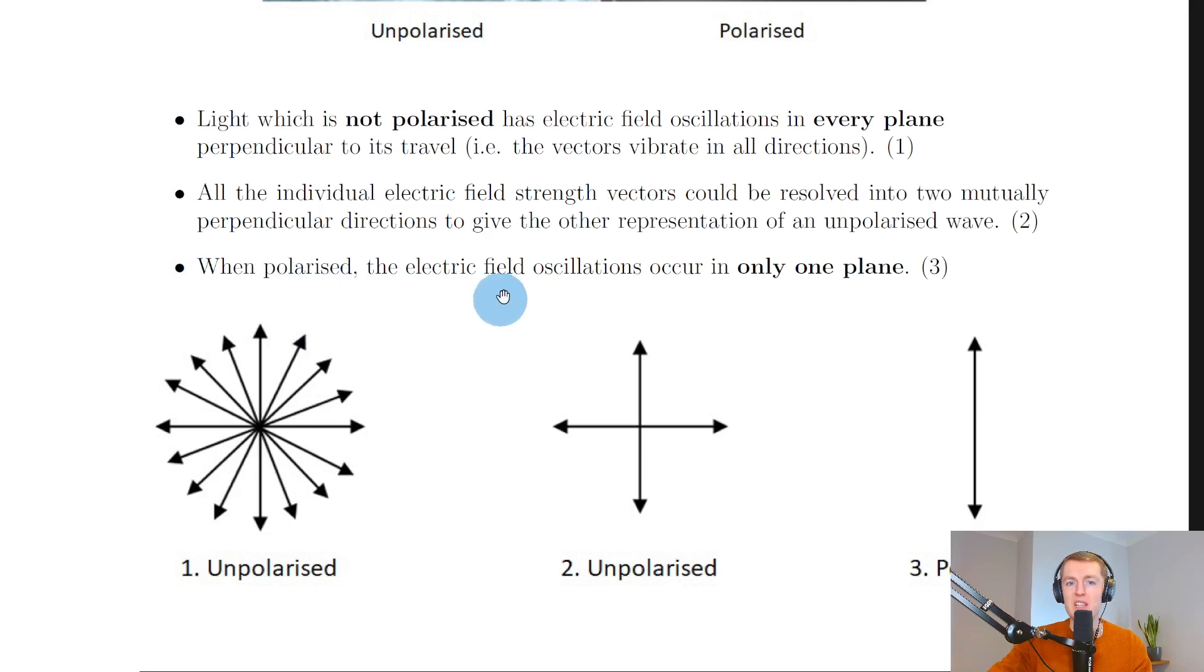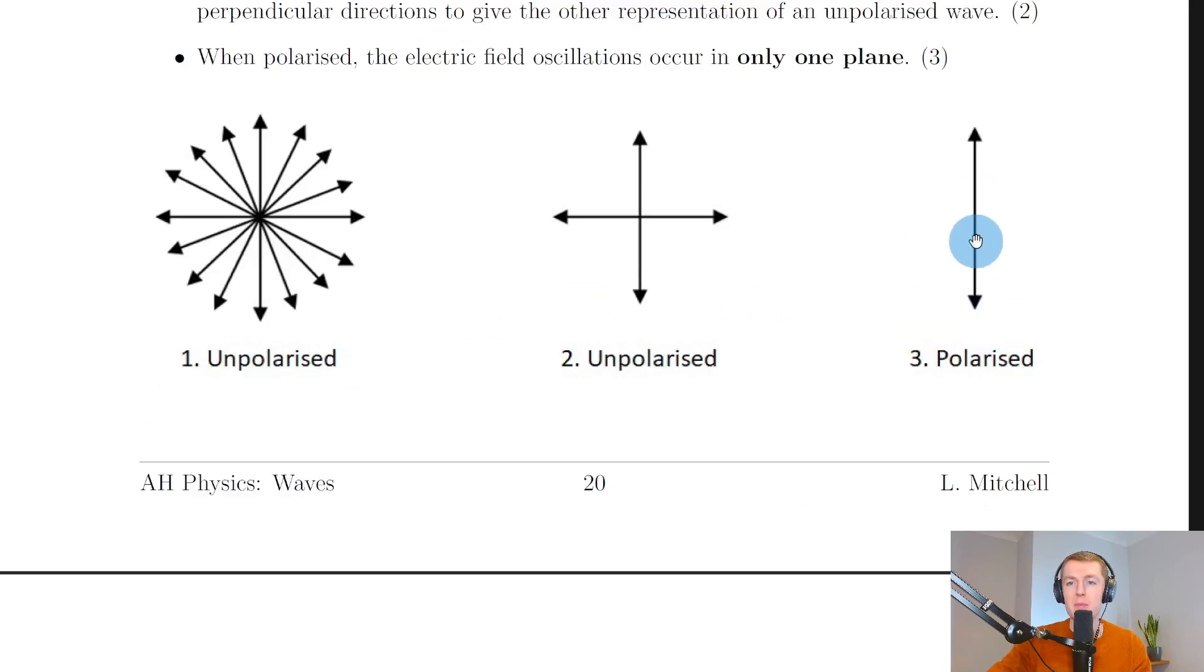Lastly, it says that when polarised, the electric field oscillations occur in only one plane. And this diagram for number three shows an example of polarised light. And you can see the electric field vector here only has one plane. So this is the vertical plane as opposed to the horizontal plane. So if we were thinking about a polarising filter and the light being polarised in the vertical plane, then that means that light would only pass through in the vertical plane and would be blocked in the horizontal plane. That is, the light from the unpolarised wave here in the horizontal plane wouldn't get through, but the light in the vertical plane would. And that's how polarising sunglasses, for example, are able to block out light or reduce glare.